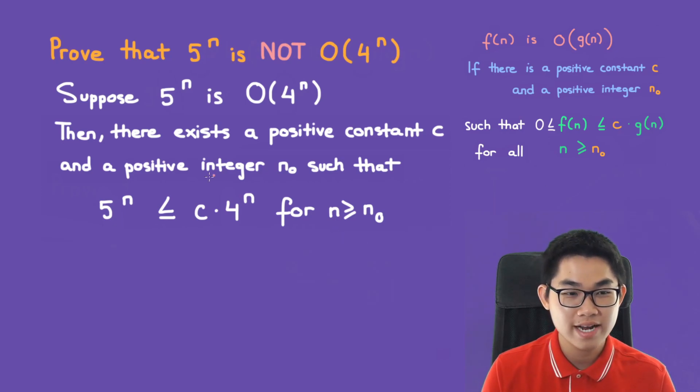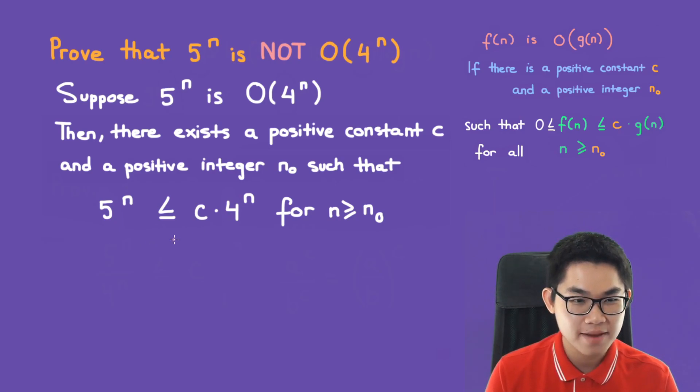Now we're going to show that this leads to a contradiction or something that doesn't make sense. So let's divide both sides by 4 to the power of n.